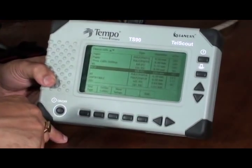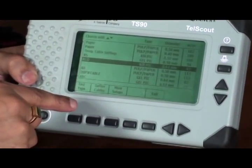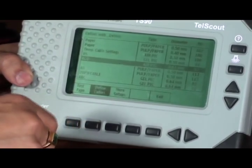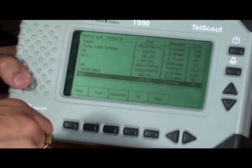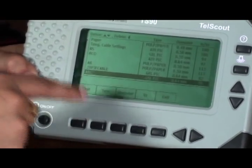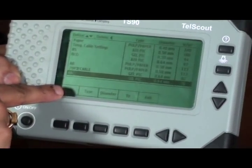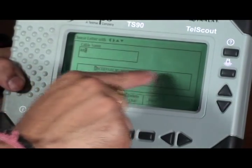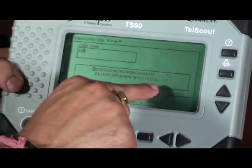To define and feed the type of cable, press the define cables button. Feed in the type of cable by selecting alphabets and numericals from the virtual keyboard.